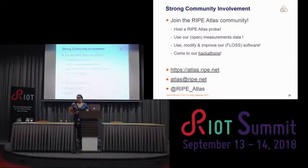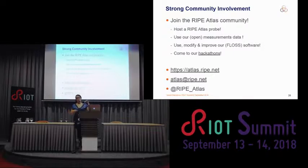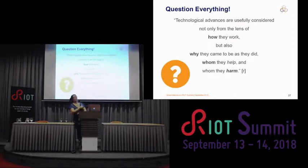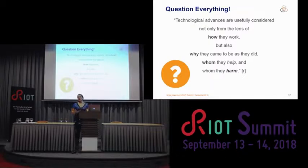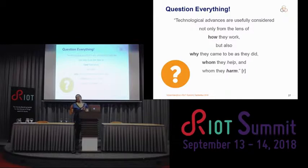Soon we will have the fourth generation of the RIPE Atlas probe available for distribution again. We also have a different device called the RIPE Atlas anchor, which is a bigger server you can keep closer to your infrastructure — it does more measurements and is also a target for HTTP measurements. You can follow us on Twitter. I want to finish with a message: I can't give you the answers, I can only give you more questions for your ethical considerations. So always ask yourself: what are these technologies going to be used for? Who is going to use them? Who is going to benefit? What can they be used for for the good? And how can they also be abused for evil? Thank you very much.